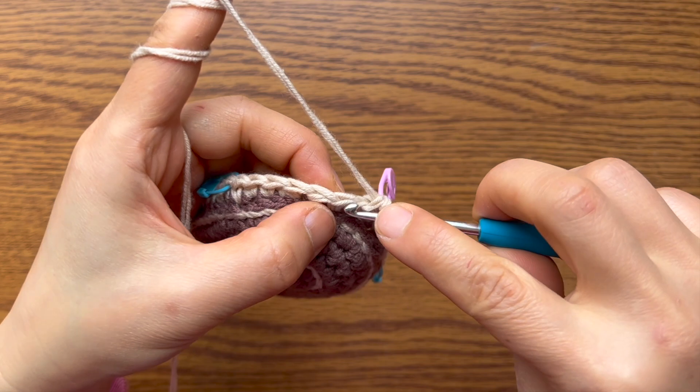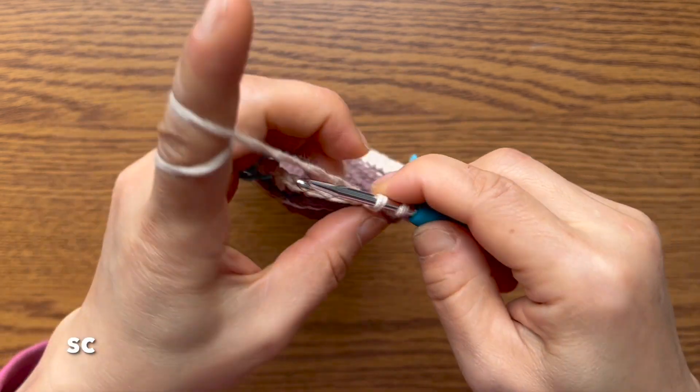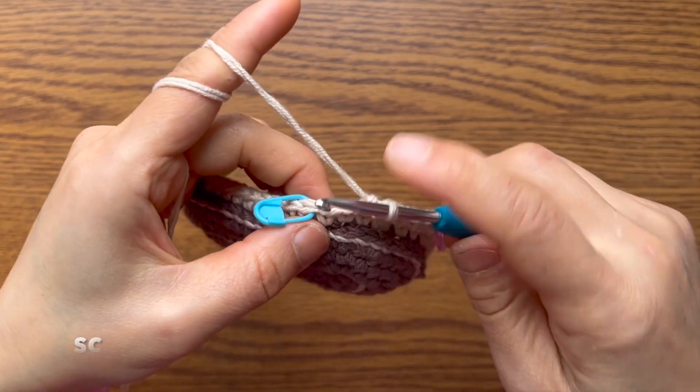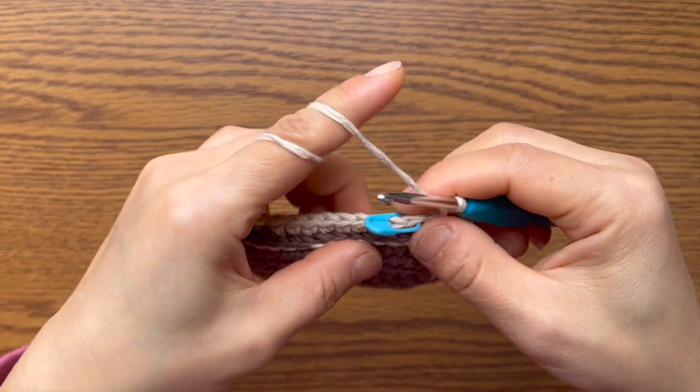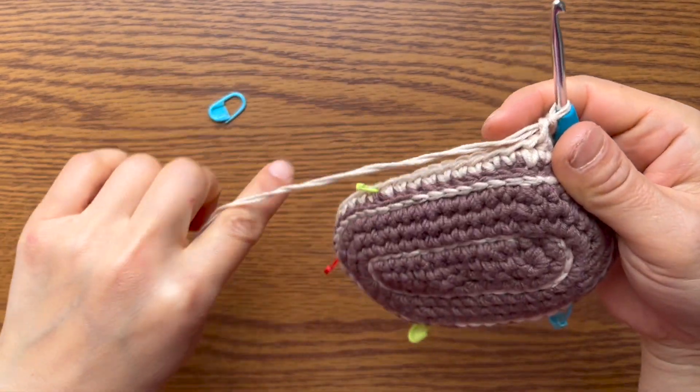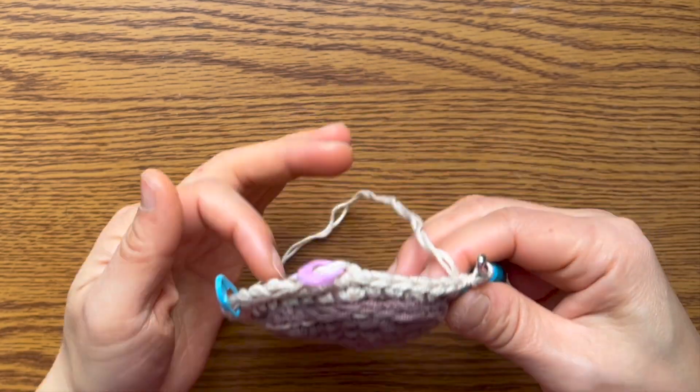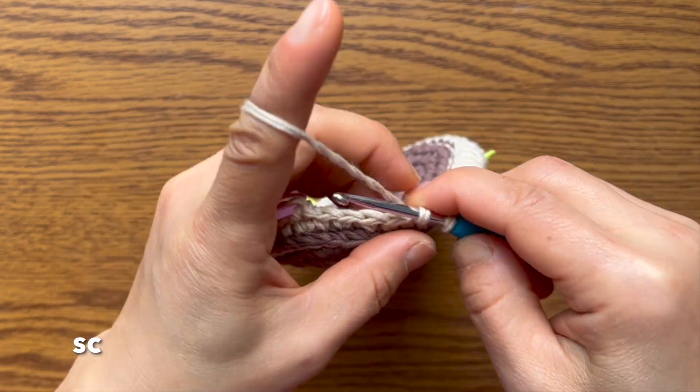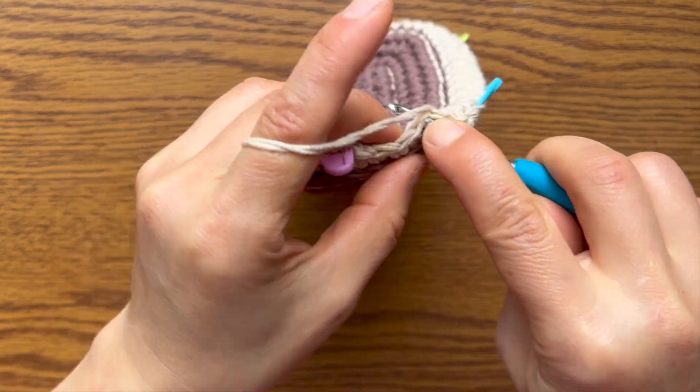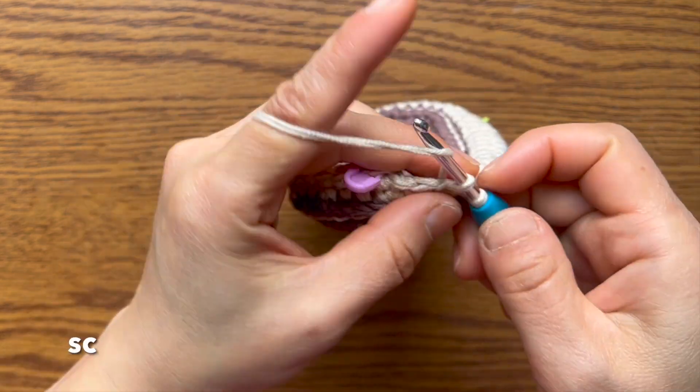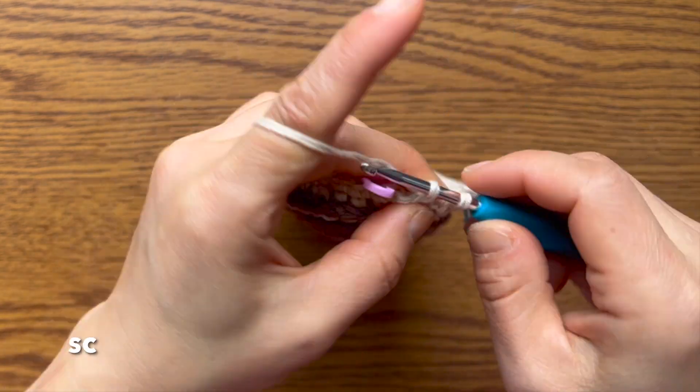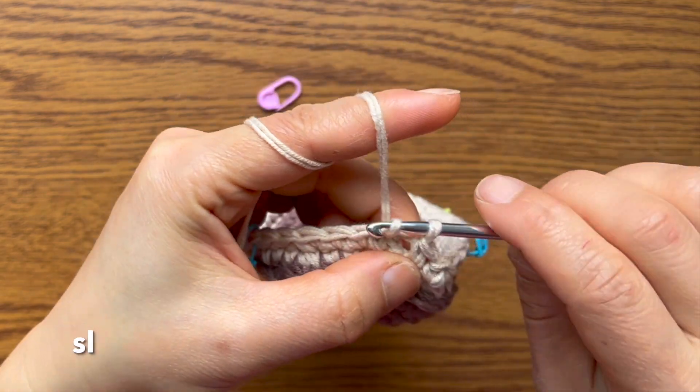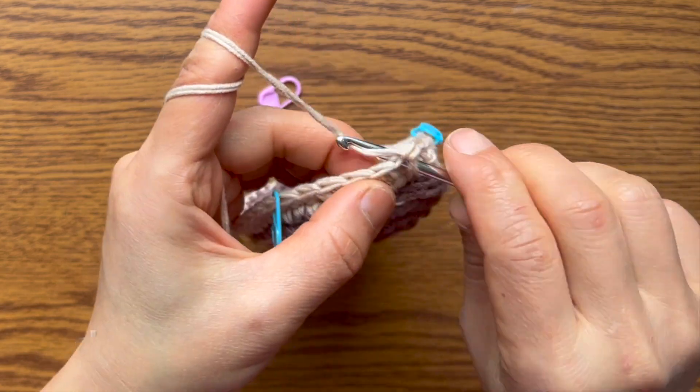Decrease one stitch here on this side. Two single crochets. Decrease one stitch. One single crochet each to the blue marker on the other side. Same as before, decrease one stitch on this side. One single crochet each to the pink marker. Slip stitch, chain one, single crochet in the same space.